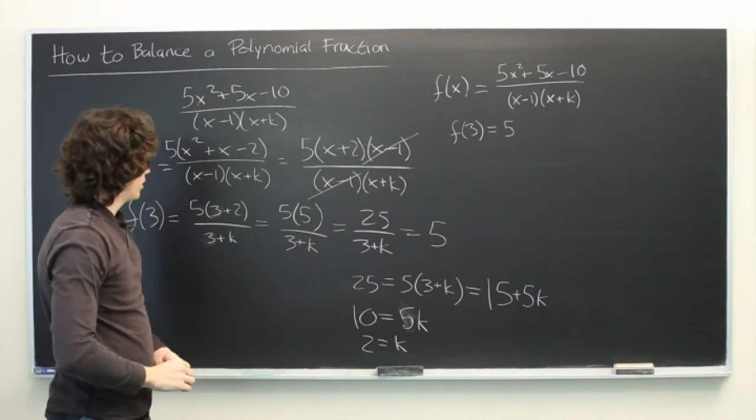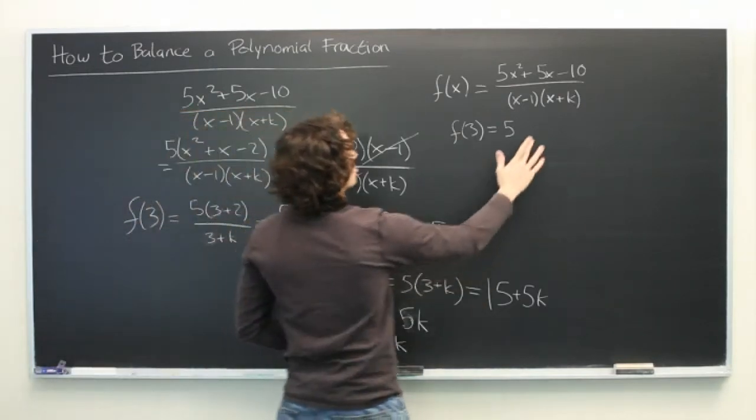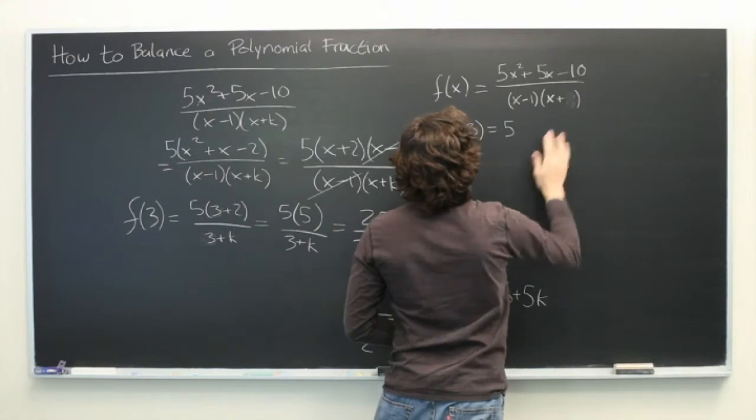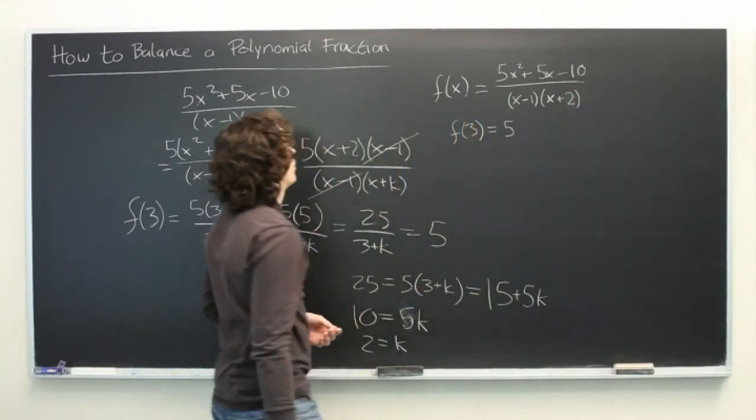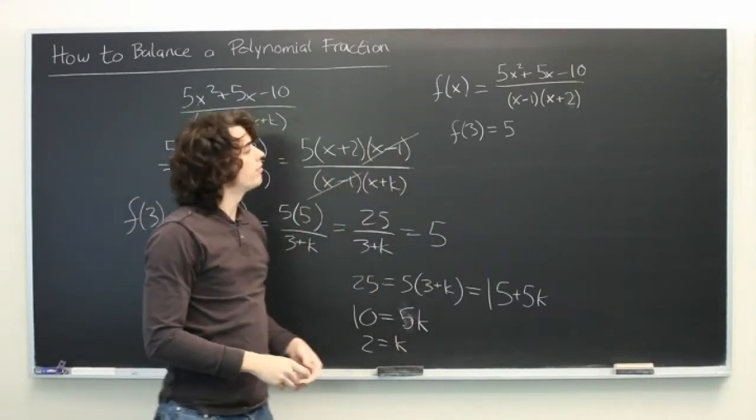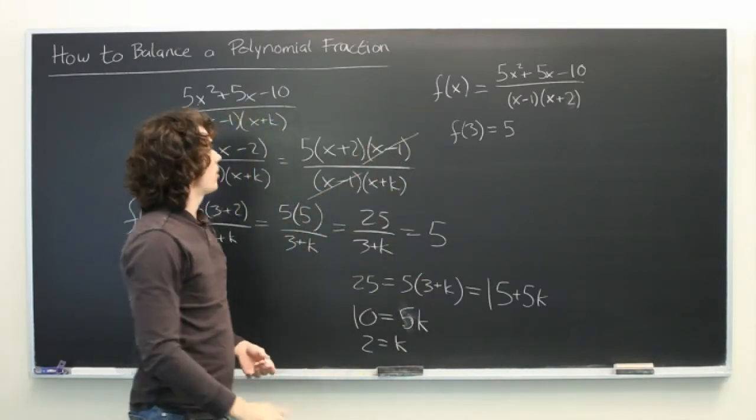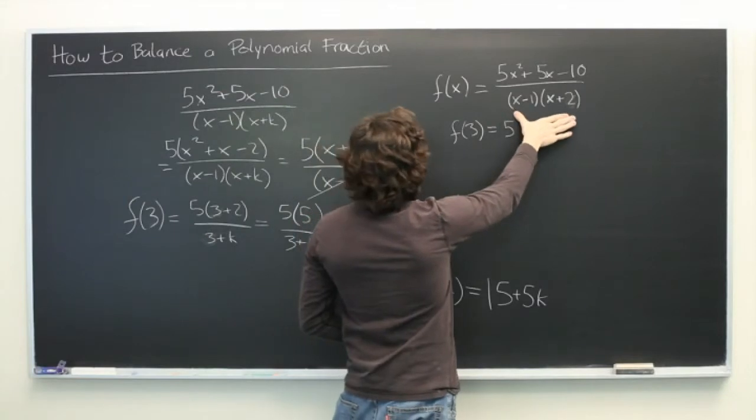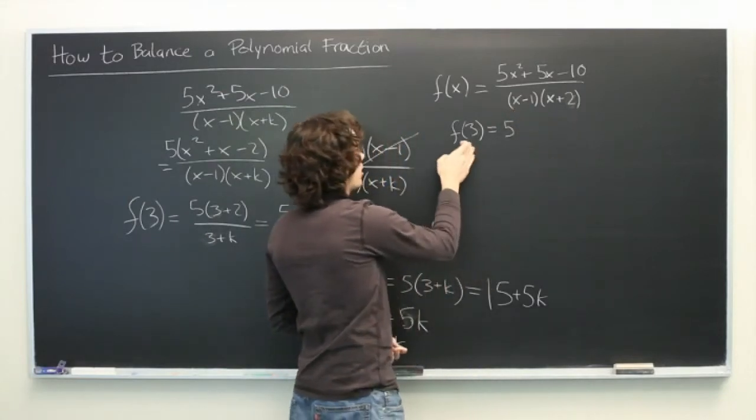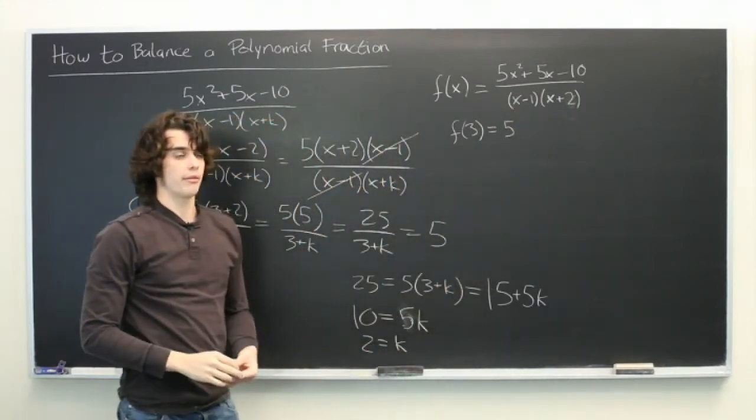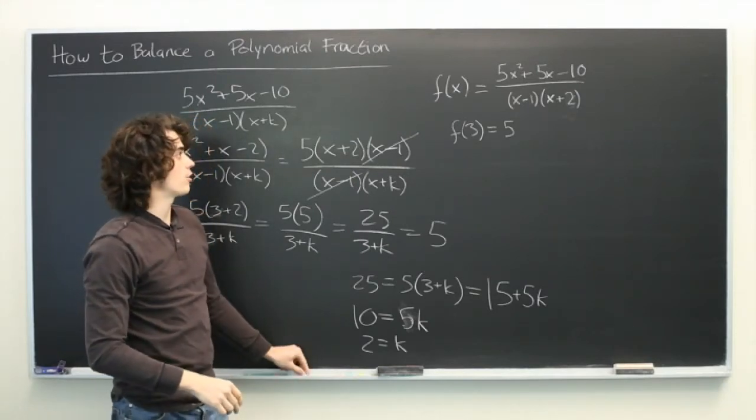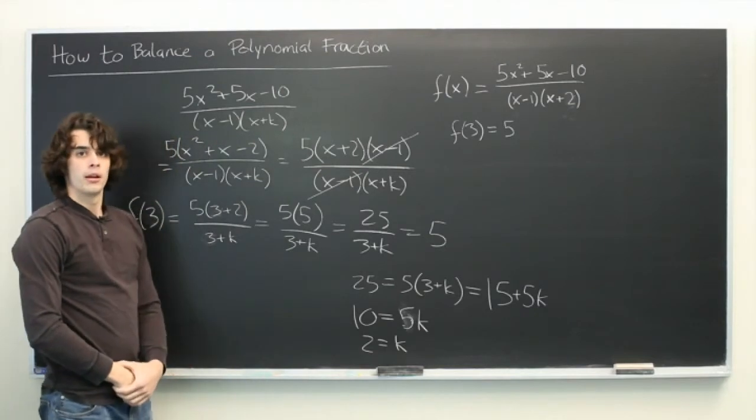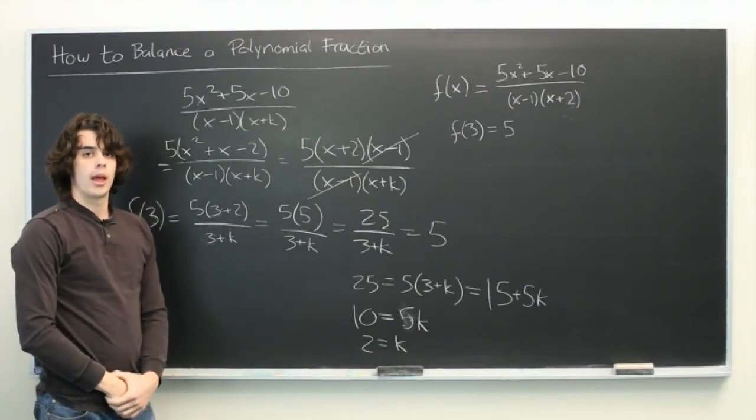And if we did everything correctly, we should be able to plug in that value to our original equation and these two should be true. You can check your work by simply taking this new function that we arrived at, plugging in f(3) and seeing if it equals 5. And if that's true, then everything is correct. We've balanced our polynomial fraction. My name is Ryan Malloy and we've just discussed how to balance a polynomial fraction.